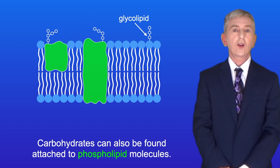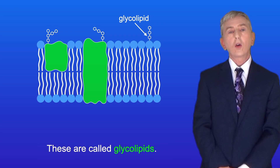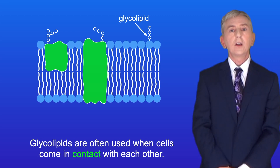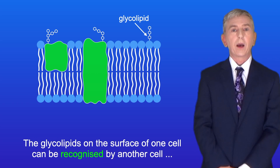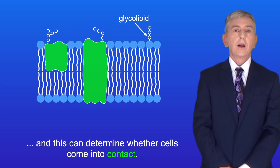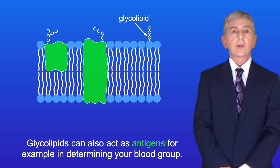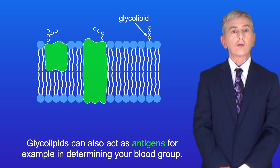Carbohydrates can also be found attached to phospholipid molecules. These are called glycolipids. Glycolipids are often used when cells come in contact with each other. The glycolipids on the surface of one cell can be recognised by another cell, and this can determine whether cells come into contact. Glycolipids can also act as antigens, for example in determining your blood group.